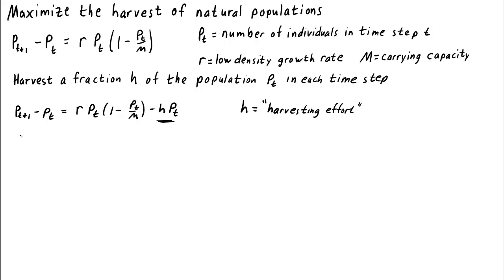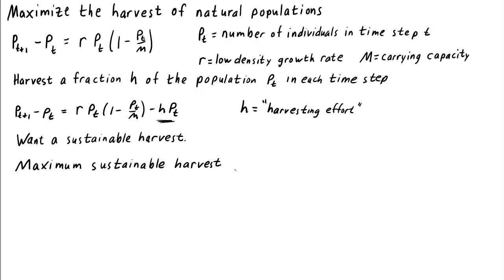So what we want is a sustainable harvest — we want to maximize the sustainable harvest. If we harvest too much, we won't have a sustainable harvest. If we harvest too little, we won't get much harvest. Therefore, the maximal sustainable harvest probably occurs at some intermediate level of the harvesting effort, and we want to determine this maximal sustainable harvest.